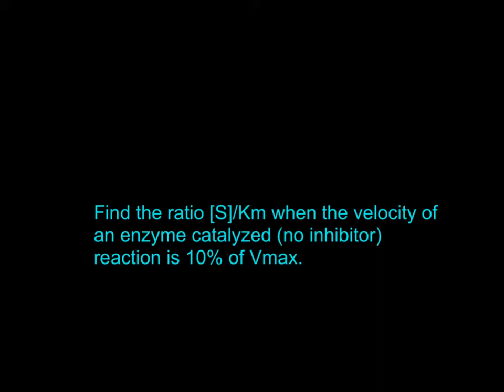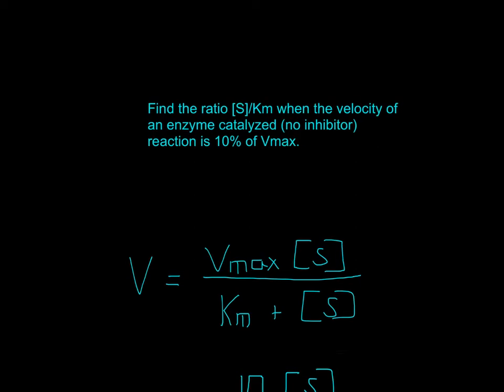So let's start with the Michaelis-Menten equation. V equals Vmax multiplied by substrate concentration divided by Km plus substrate concentration.